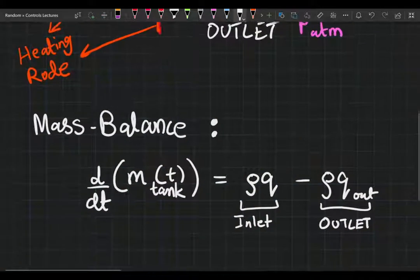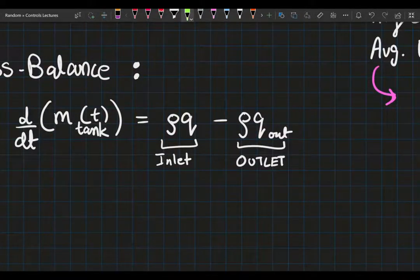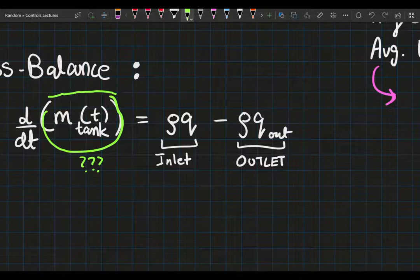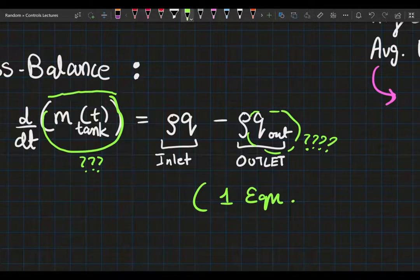The mass of the tank is what this differential equation is going to model. The dynamics of the mass inside the tank are going to be captured by this equation. We no longer have a nice equation like an overflow tank to give us the outlet flow rate. Therefore, we have one equation, the mass balance, and two unknowns.